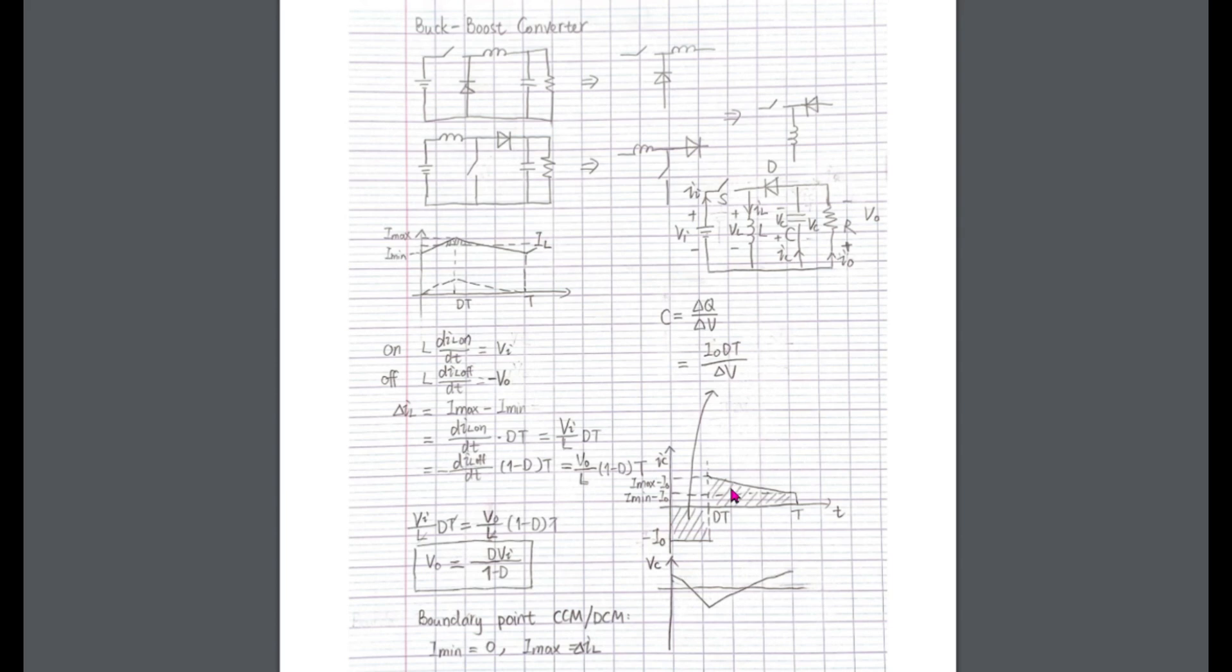When the switch is closed, the diode is reverse biased, so only the capacitor supplies the load. The diode current is 0. The capacitor current is considered to be the same as the output current but with opposite polarity. The total charge leaves the capacitor during the on-phase is the surface of this shadow.